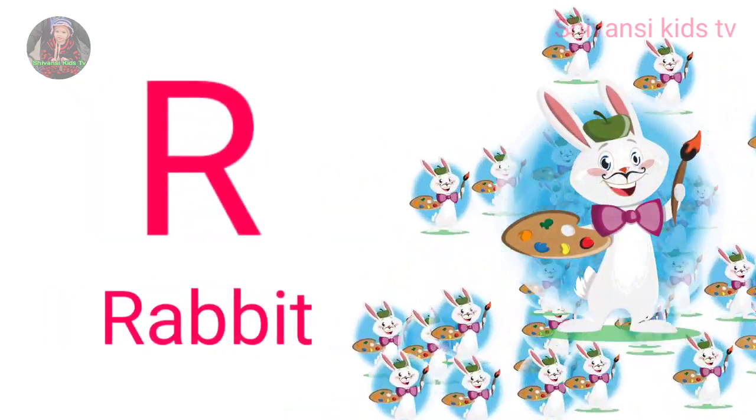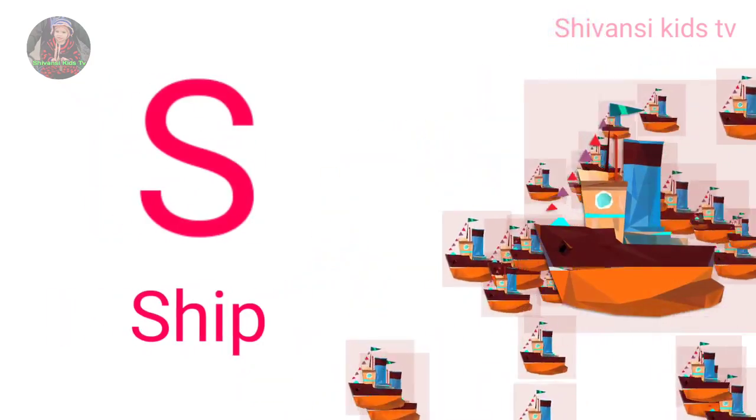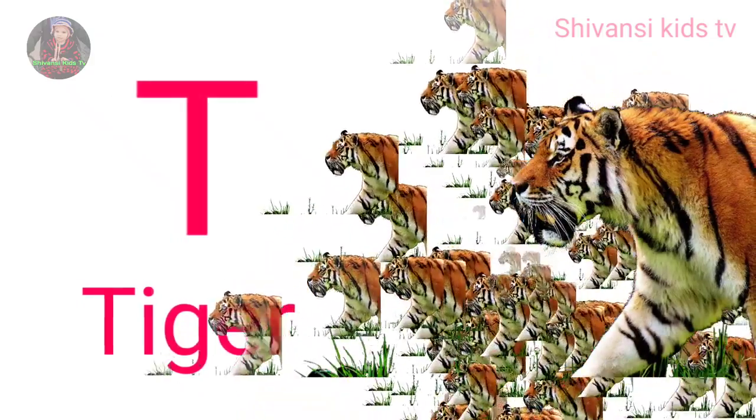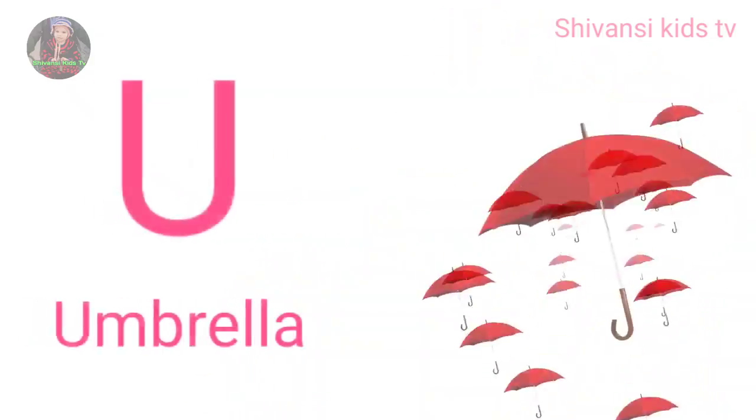R for rabbit, S for sheep, T for tiger, U for umbrella,